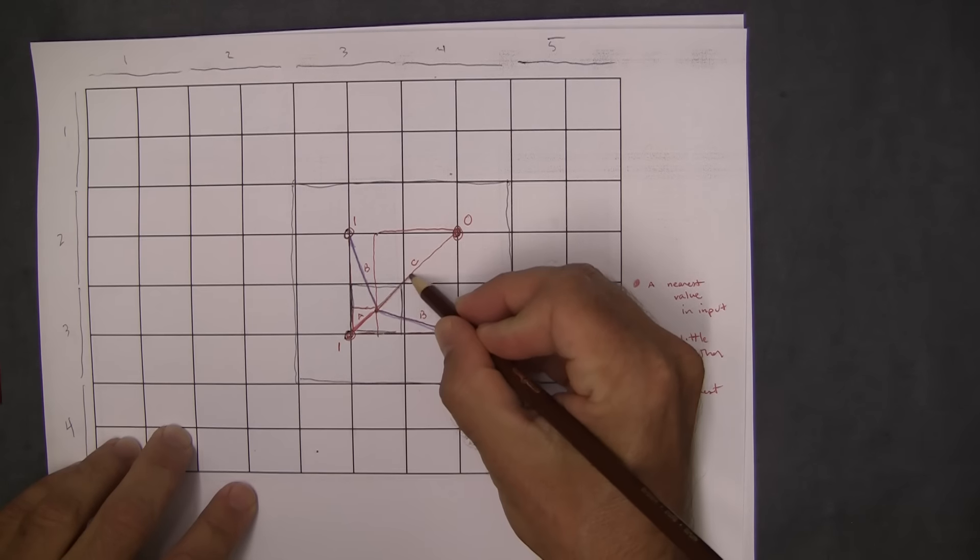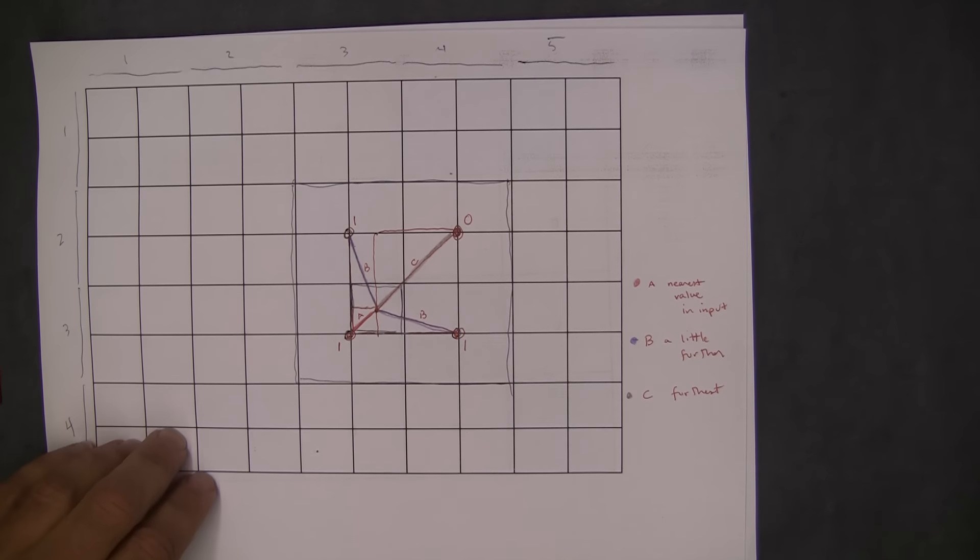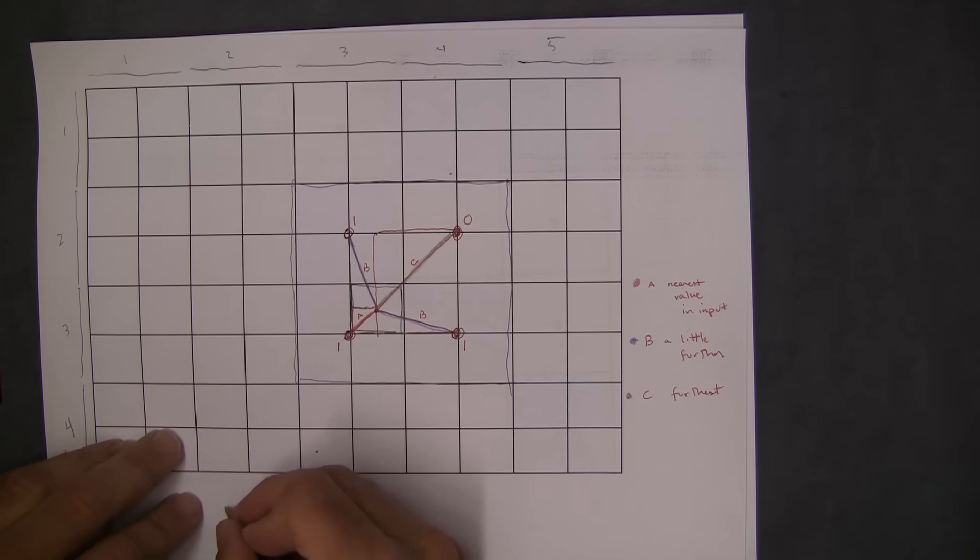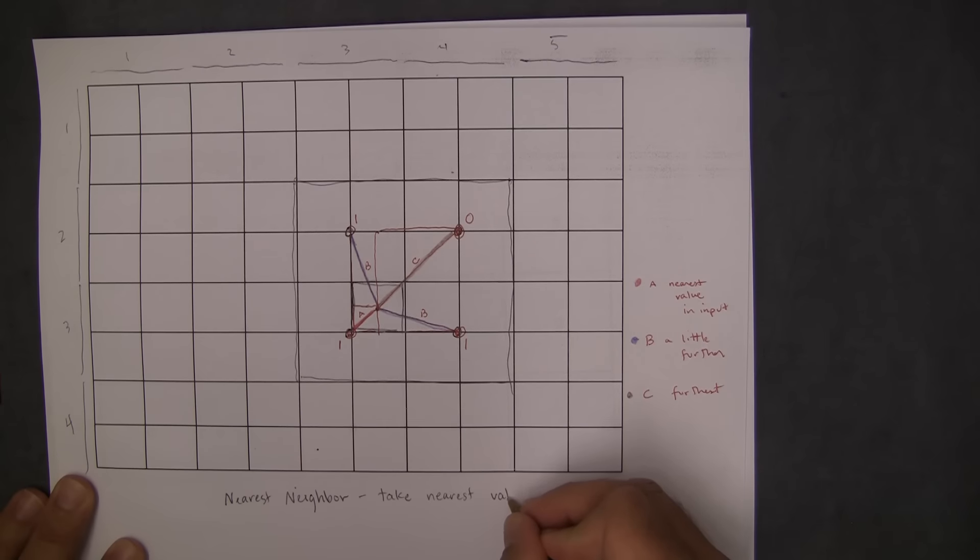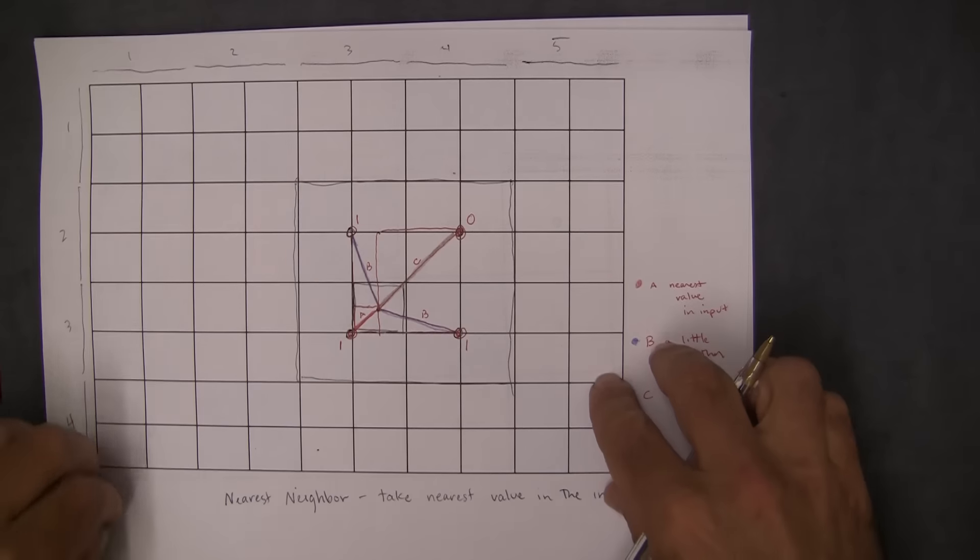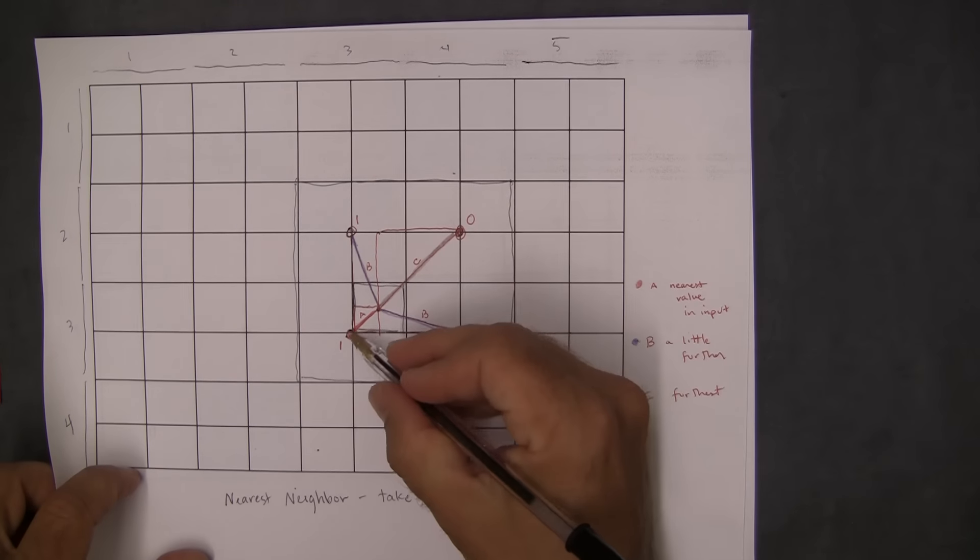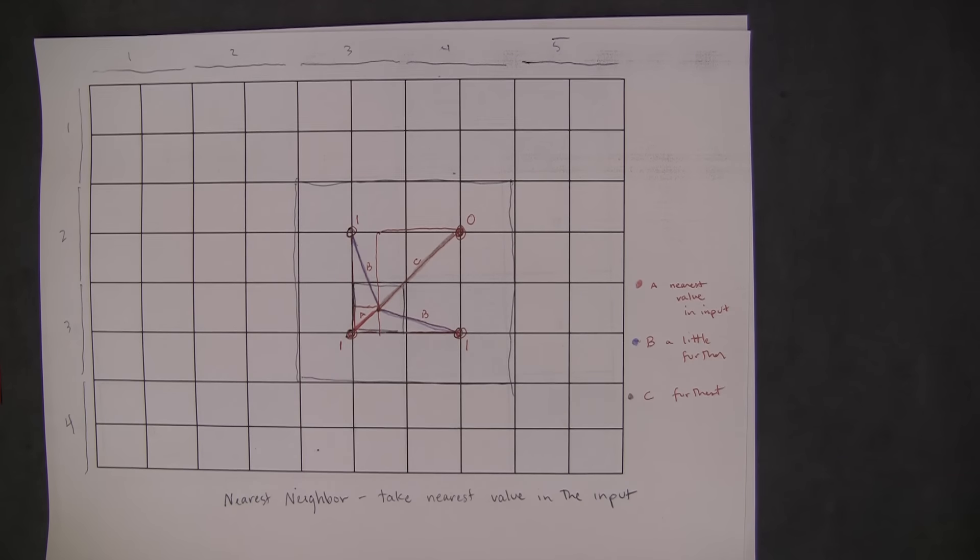So one method that we could do is called the nearest neighbor. And what nearest neighbor is basically going to do is just take the nearest value in the input. So if we use the nearest neighbor for this, the nearest value is the one that's separated by A, which is 1, so we would just stick a 1 there.